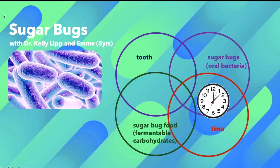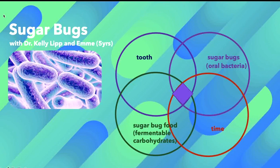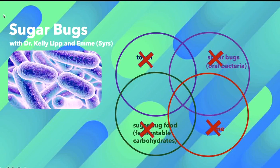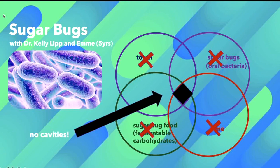And lastly, these sugar bugs need time to cause cavities. It takes an average of six months for a cavity to form. If you have all four of these things — sugar bugs, teeth, sugar bug food, and time — you'll get cavities. And if any of these four components are eliminated, you won't get cavities.